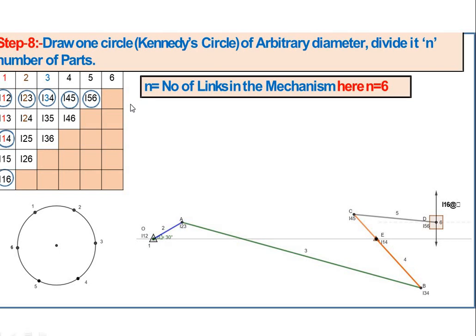So the ICRs I12, I23, I34, I45, I56, I16, and I14 have been located. The remaining 8 ICRs must be located using the Arnold-Kennedy theorem with a circle diagram.